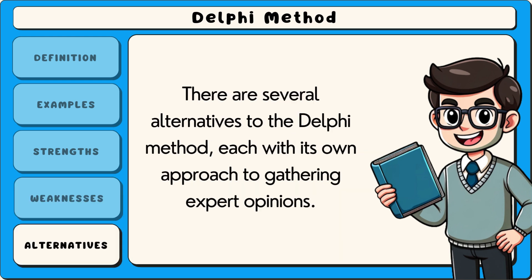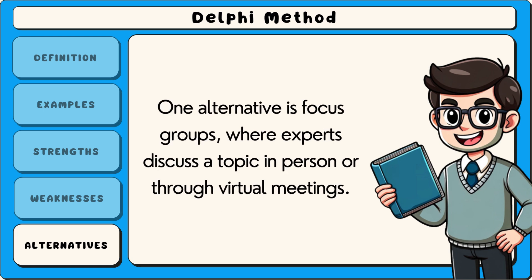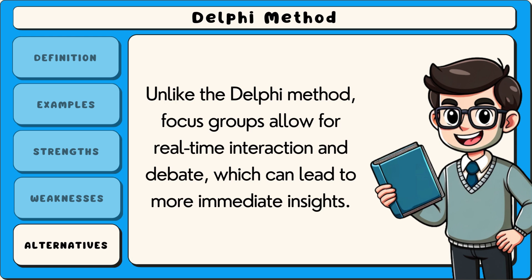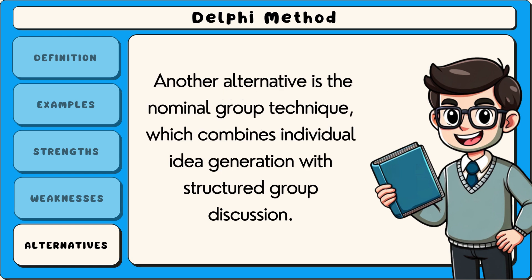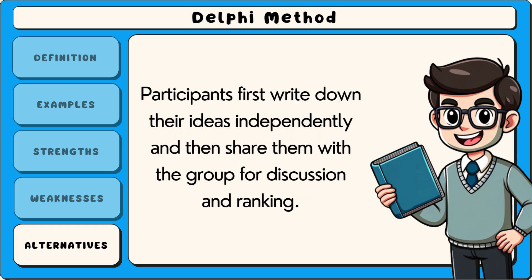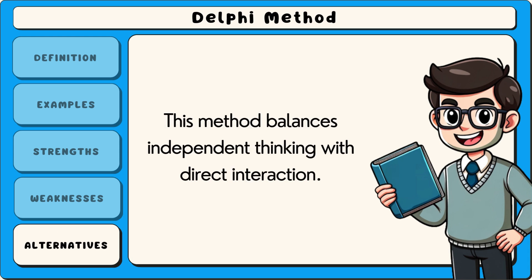There are several alternatives to the Delphi method, each with its own approach to gathering expert opinions. One alternative is focus groups, where experts discuss a topic in person or through virtual meetings. Unlike the Delphi method, focus groups allow for real-time interaction and debate, which can lead to more immediate insights. However, they are more vulnerable to group pressure and dominant personalities influencing the discussion. Another alternative is the nominal group technique, which combines individual idea generation with structured group discussion. Participants first write down their ideas independently and then share them with the group for discussion and ranking, balancing independent thinking with direct interaction.